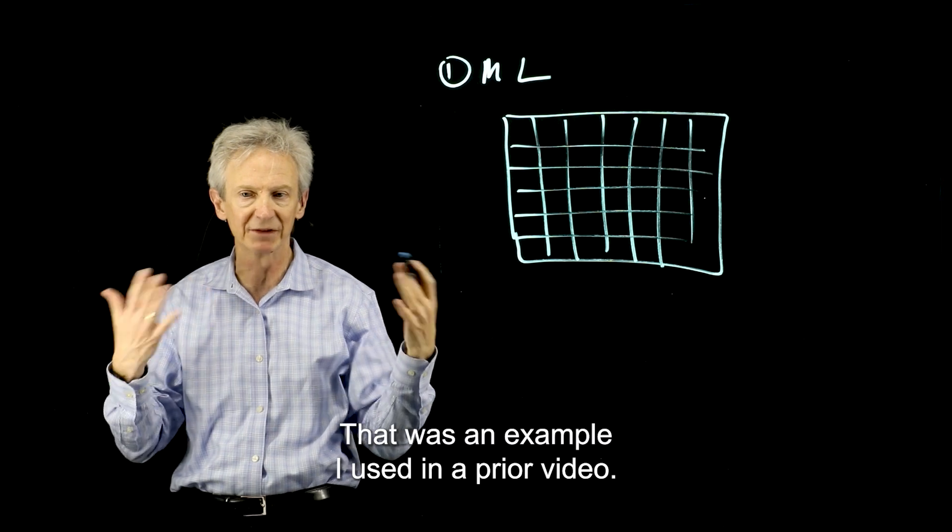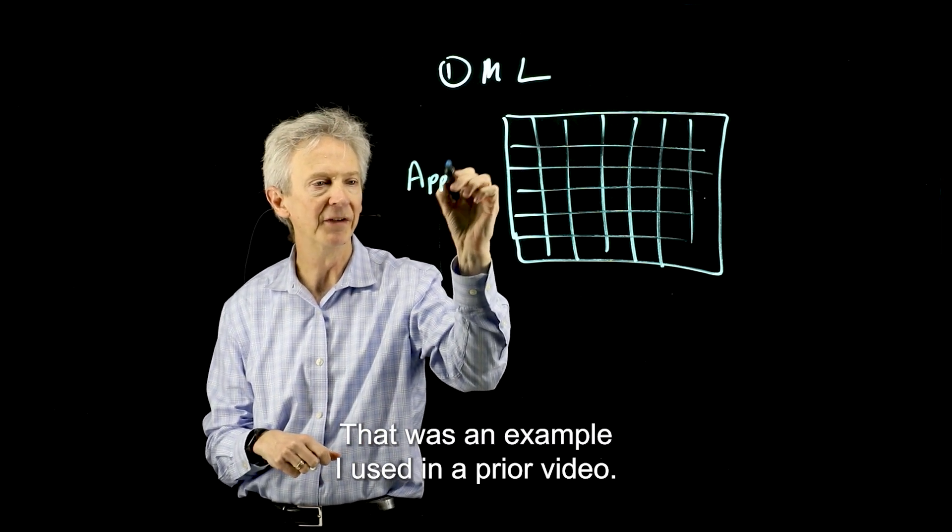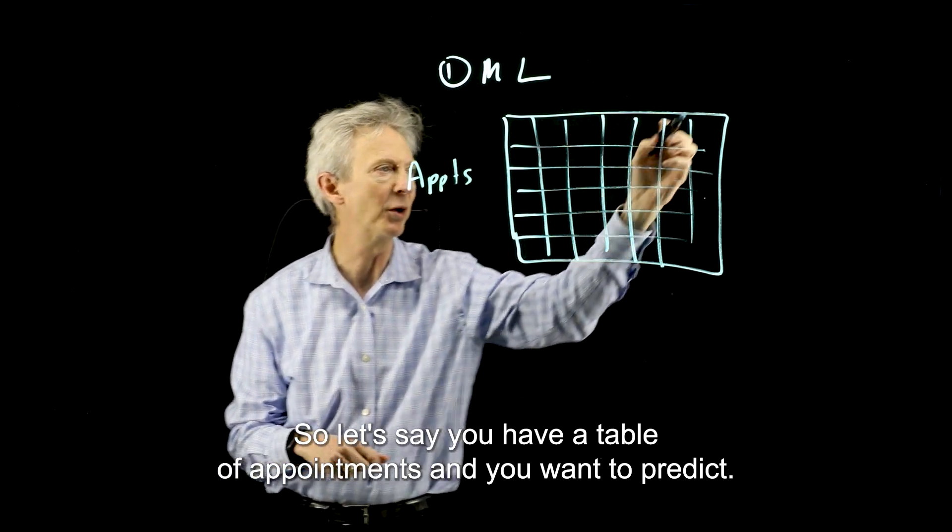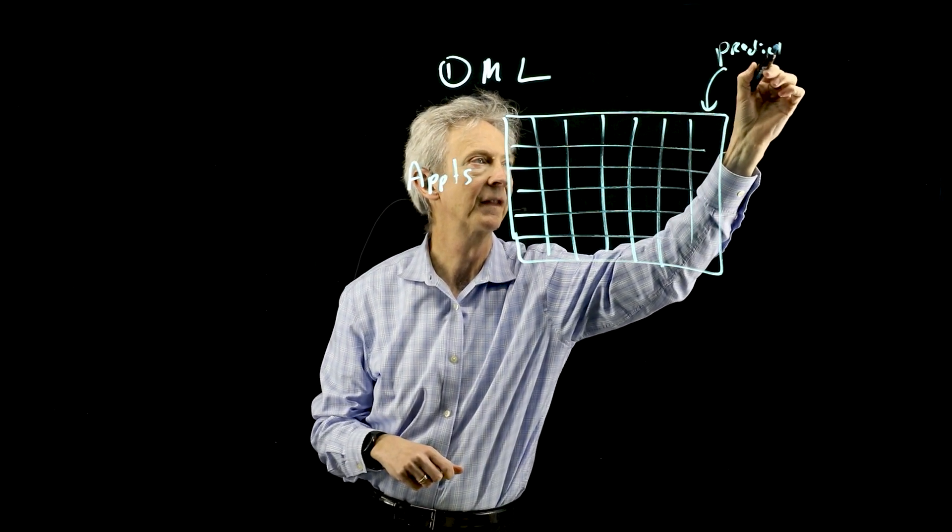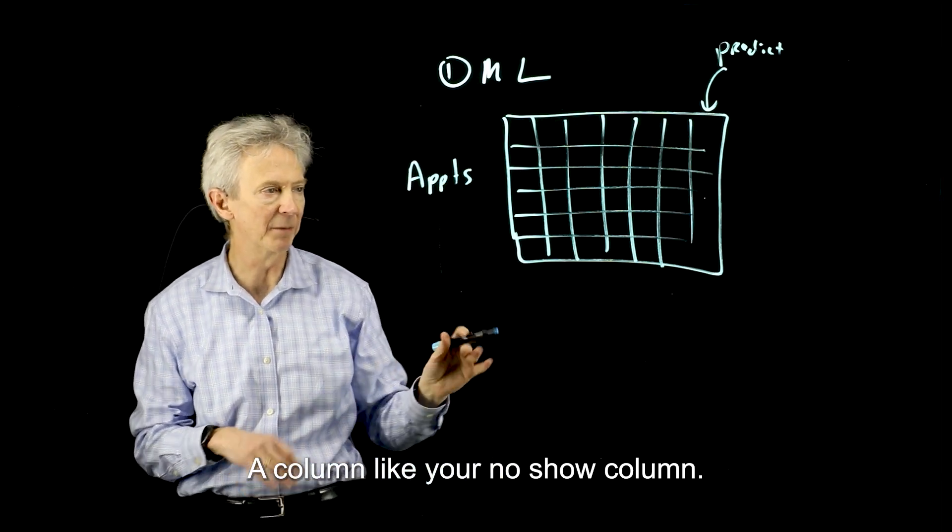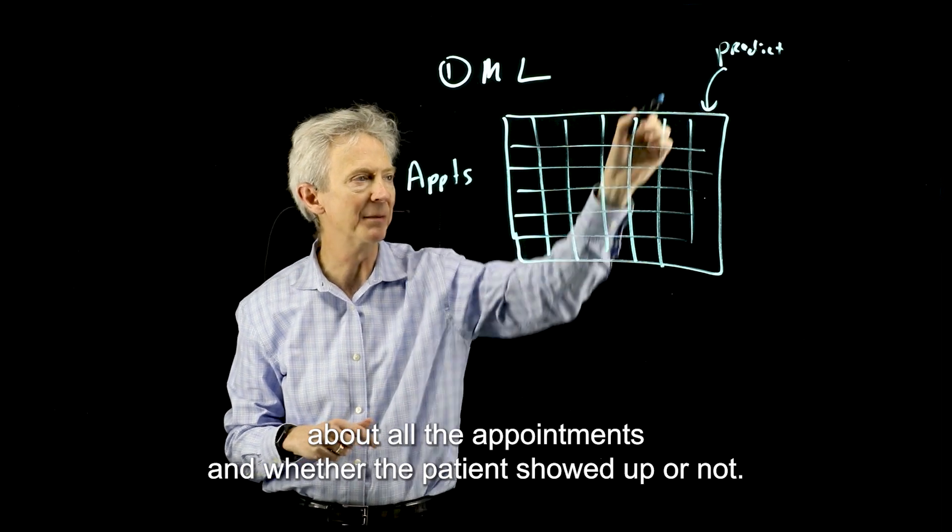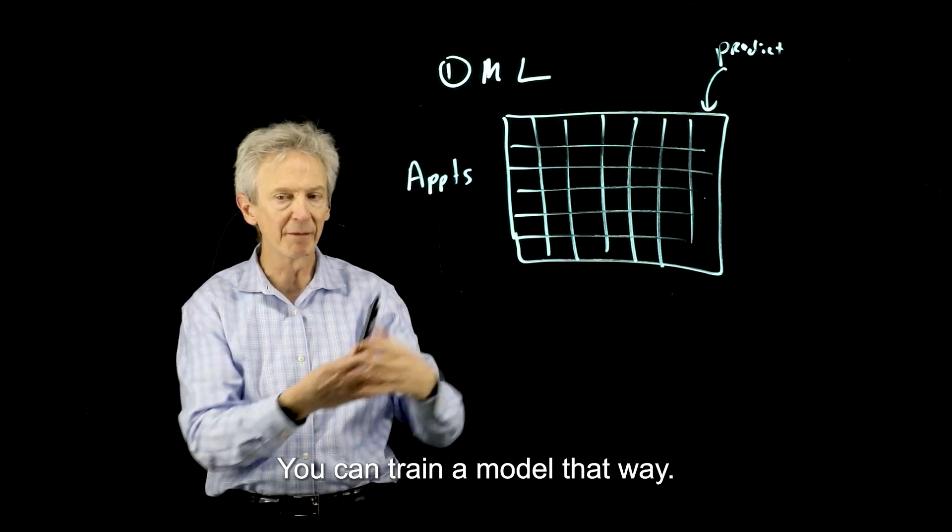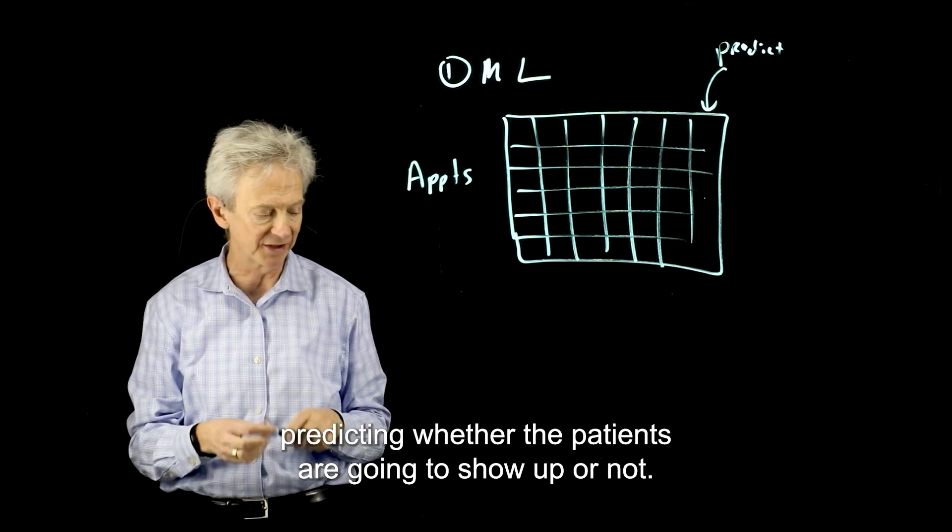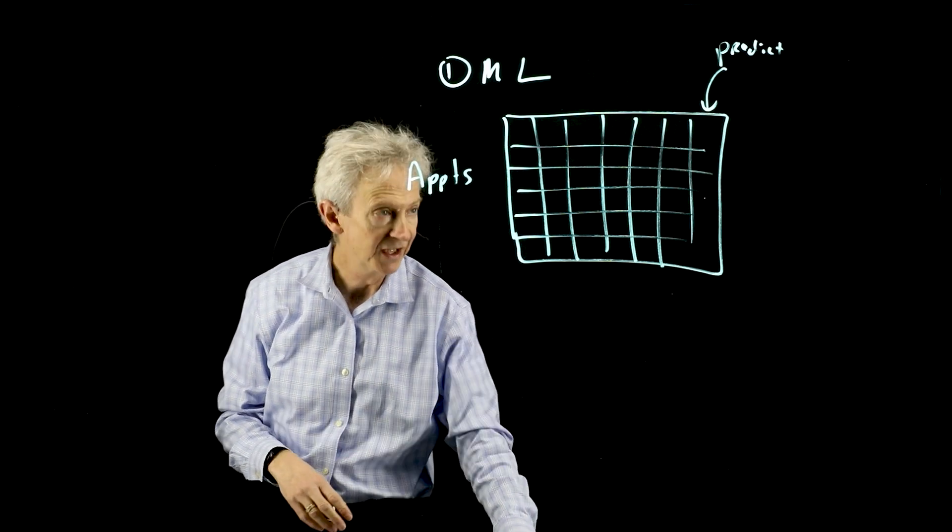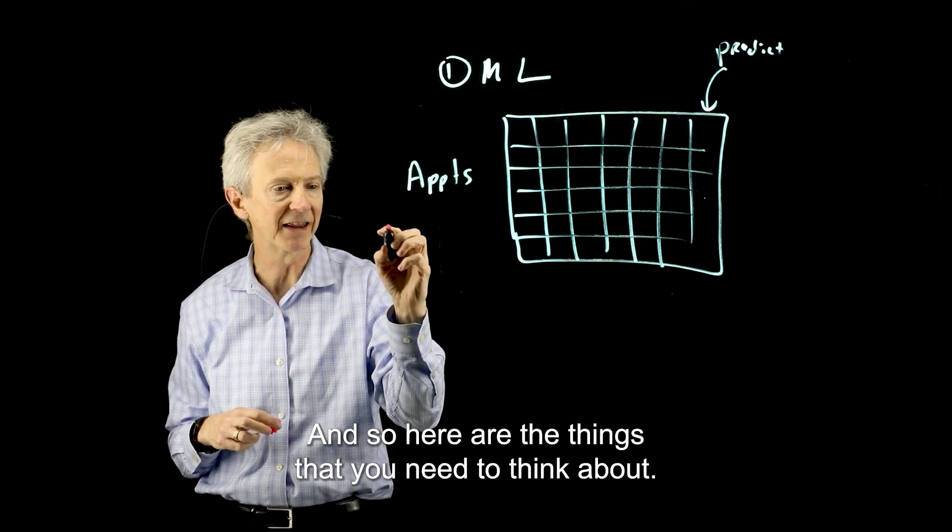Typically you have a table of data. Let's say appointment no-shows, an example I used in a prior video. You have a table of appointments and you want to predict a column like your no-show column. You have past data, the last two years, information about all the appointments and whether the patient showed up or not. You can train a model that way and then use the model to do a very good job predicting whether patients are going to show up or not.